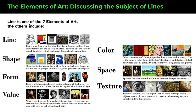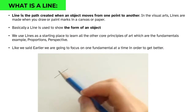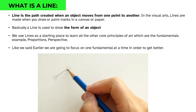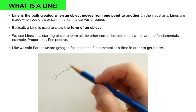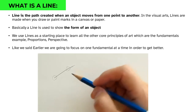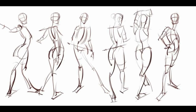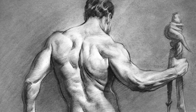What is a line? A line is the path created when an object moves from one point to another. In visual arts, lines are made when you draw or paint marks on a canvas or paper. A line is used to show the form of an object, and we use lines as a starting place to learn all the other core principles — fundamentals like proportion, perspective, and portraits.